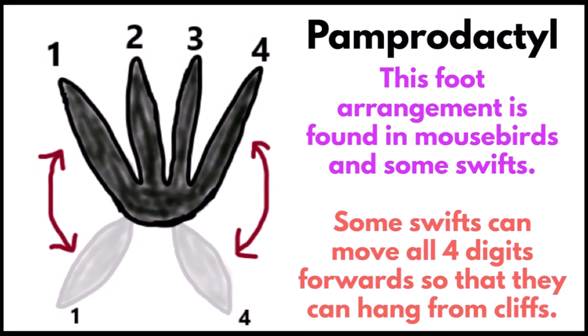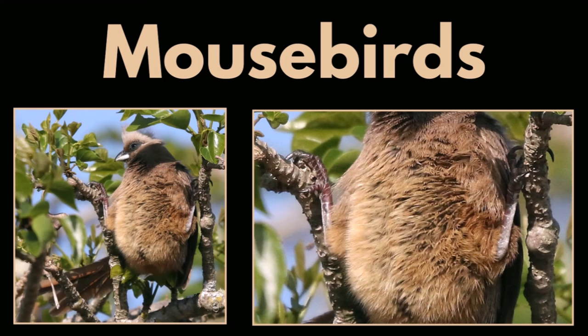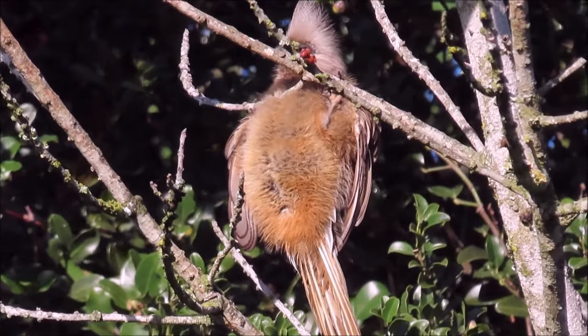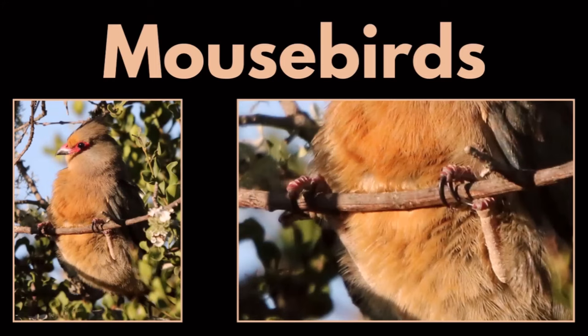Some swifts can move all four digits forwards so that they can hang from cliffs. This speckled mouse bird has three toes forwards while it hangs, and this red-faced mouse bird has two toes forwards.